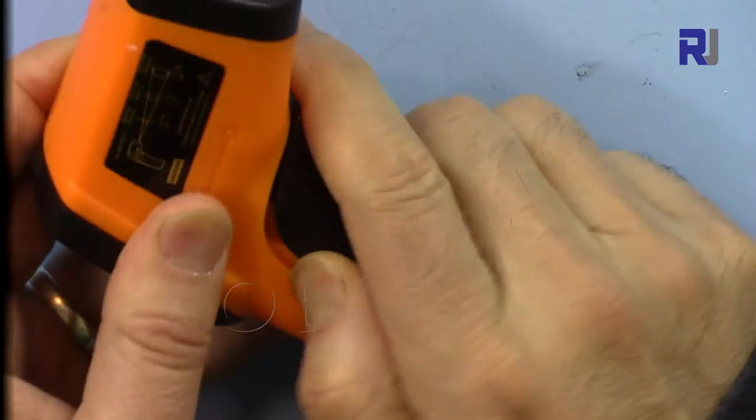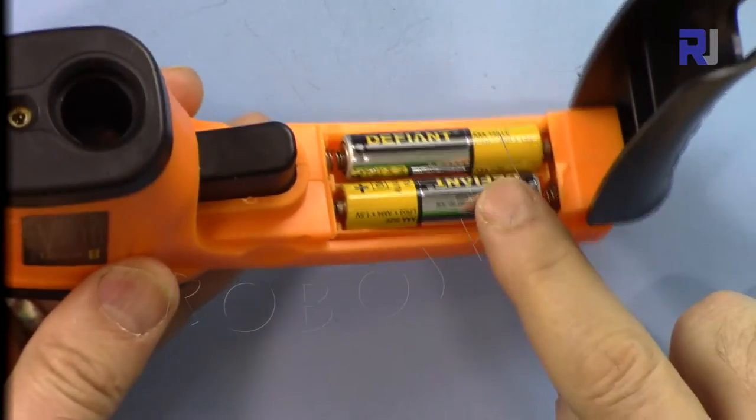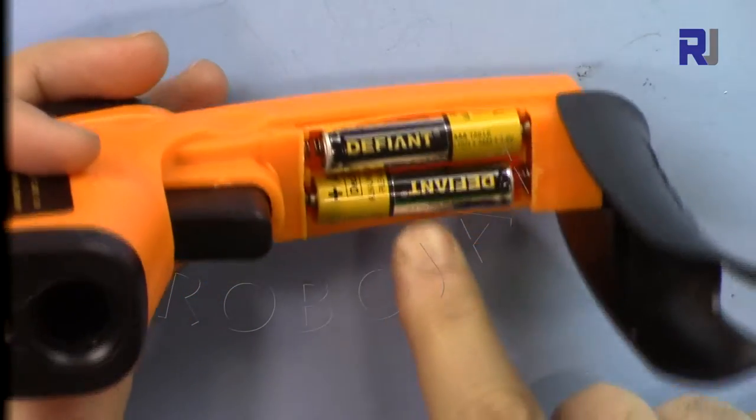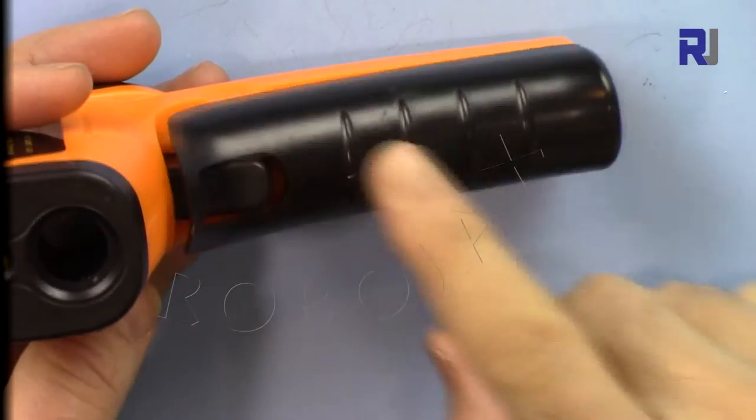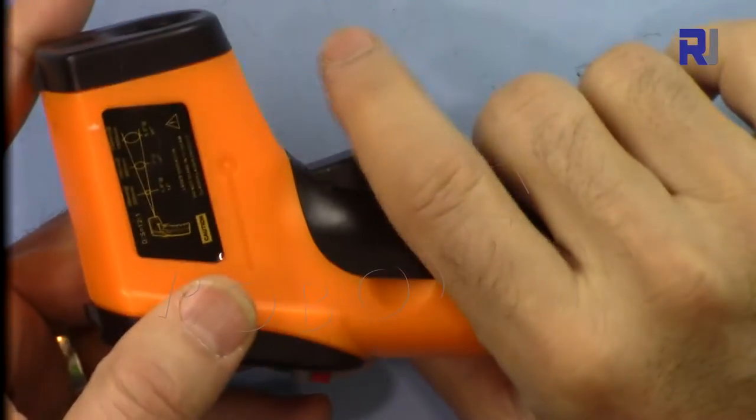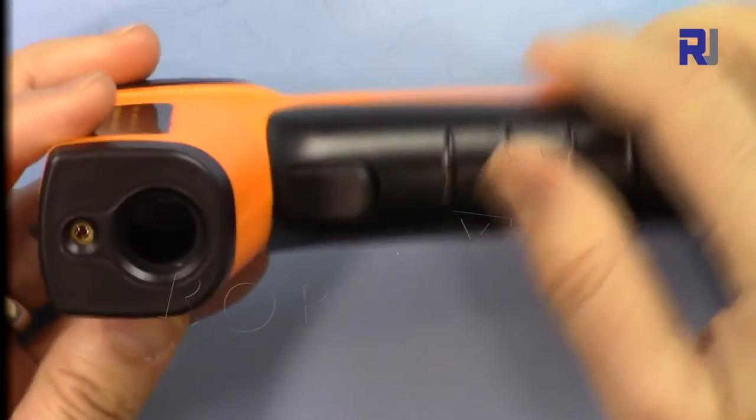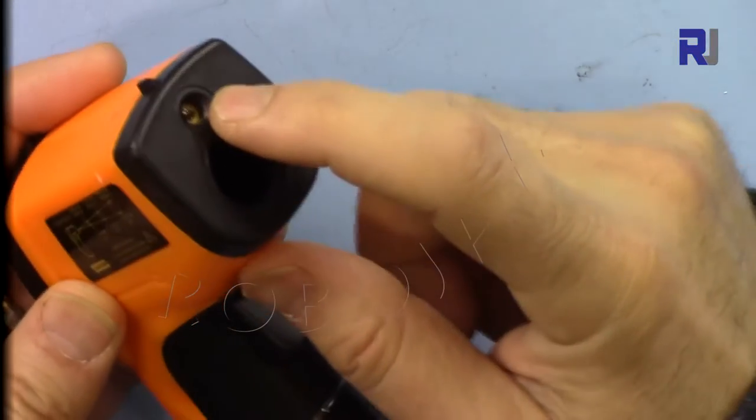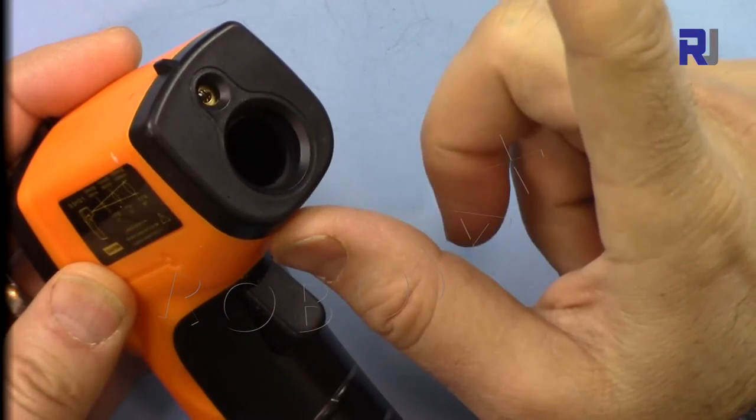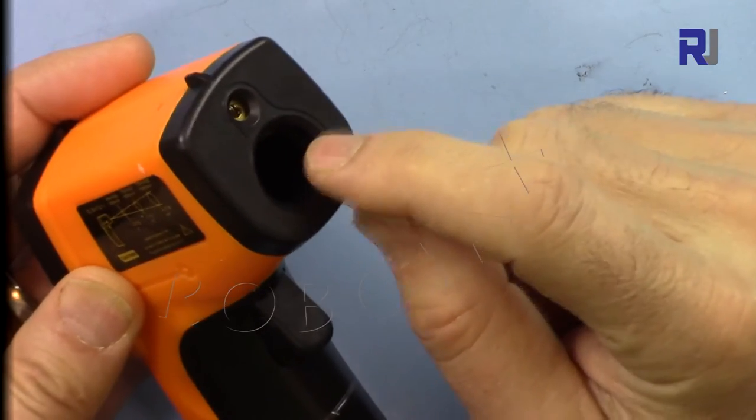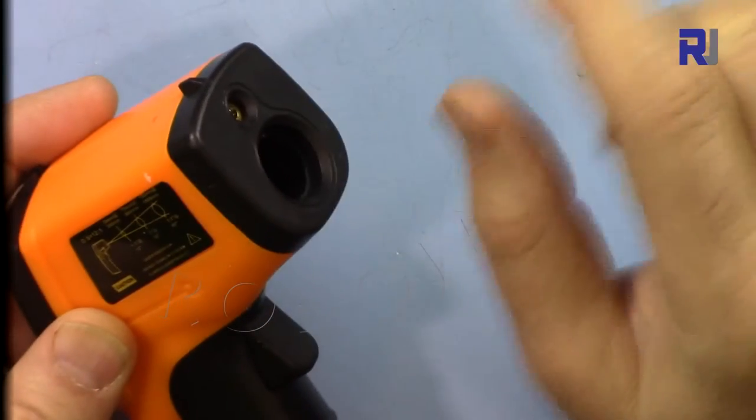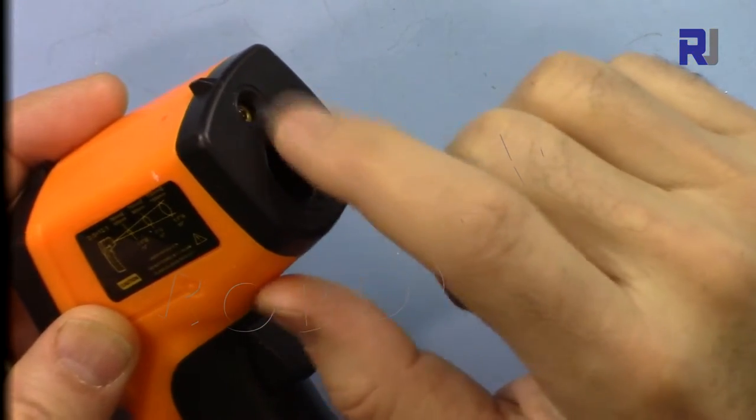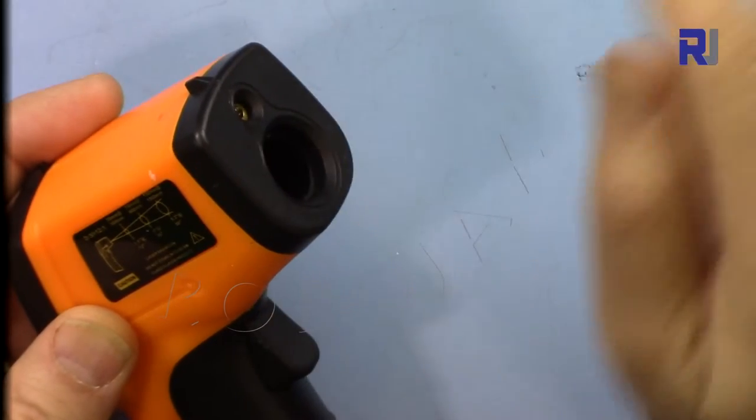It uses two triple A batteries so it's very simple. It has a trigger button and here we have infrared light that emits, and there is a lens that measures the variation of the return of the infrared and displays the value.